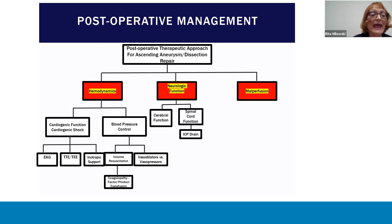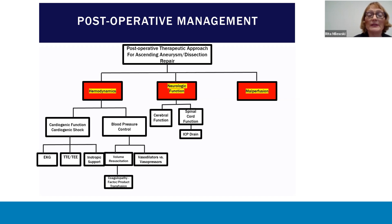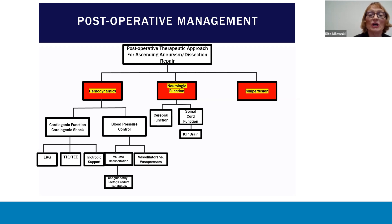Postoperative neurologic function can be divided into cerebral and spinal cord function. Ascending aortopathy and dissection repair can impact postoperative neurologic function — specifically the arch reconstruction time with either RCP or ACP. Frequent neurovascular checks are critical and must be performed to identify any postoperative neurologic dysfunction, either cerebral or spinal cord. If neurologic dysfunction or deficit is noted, it should be immediately investigated by imaging for cerebral dysfunction to identify the etiology. For spinal cord ischemia, elevation of blood pressure utilizing a pressor and consideration of an ICP drain are warranted.